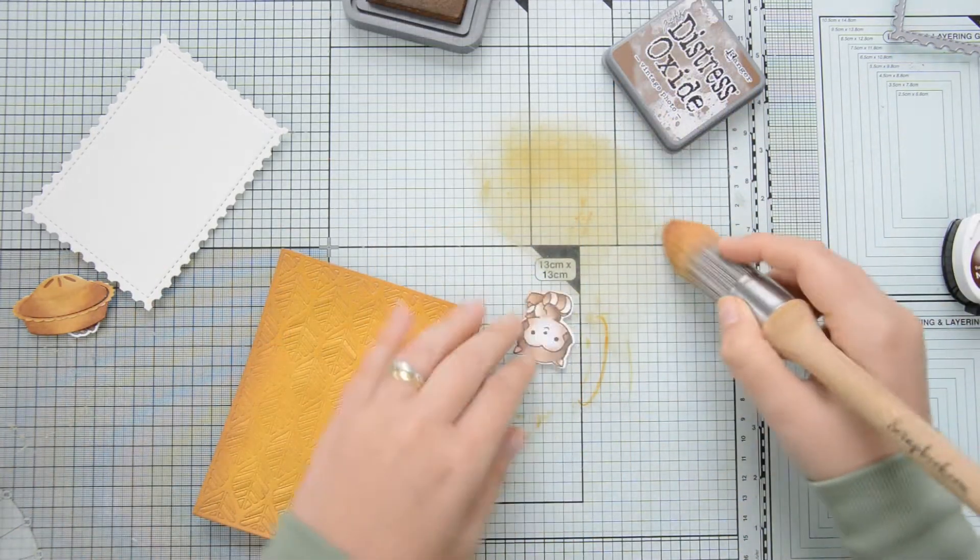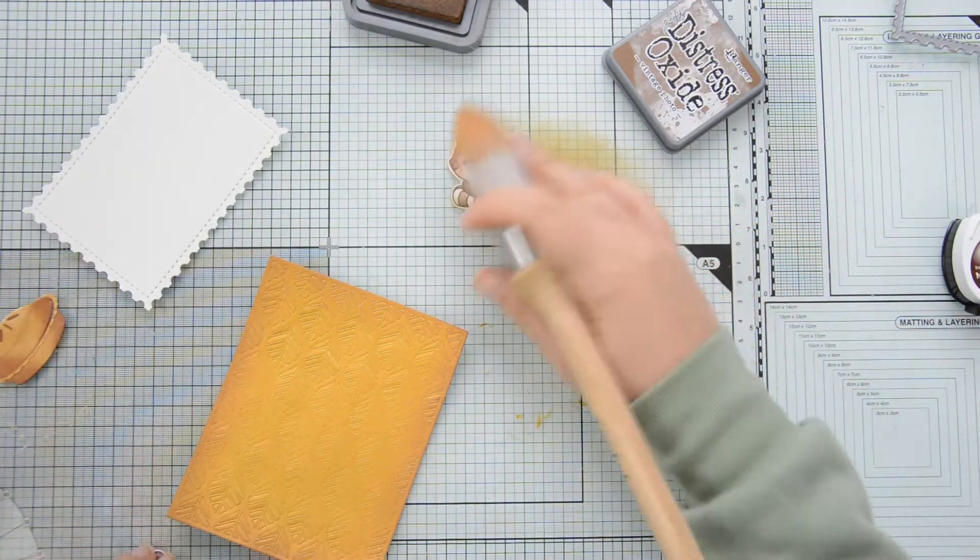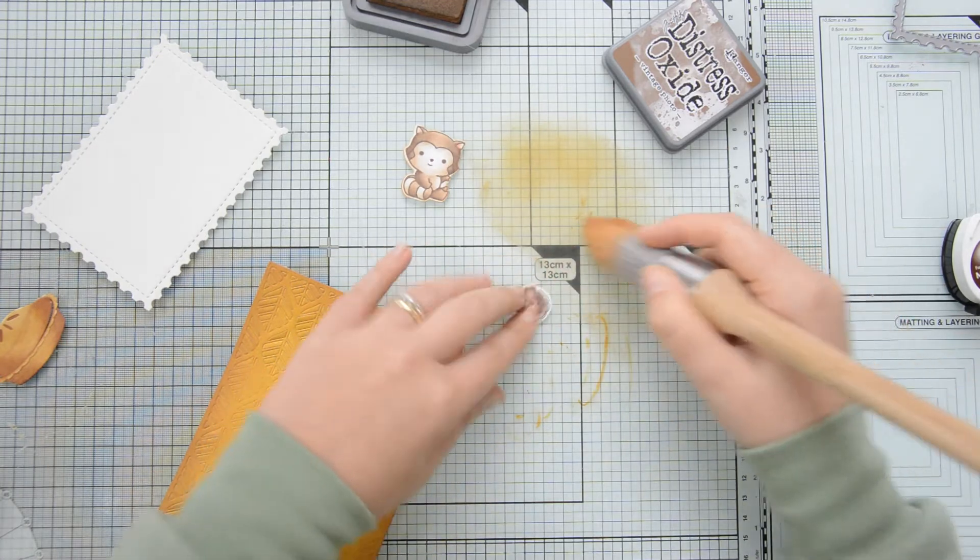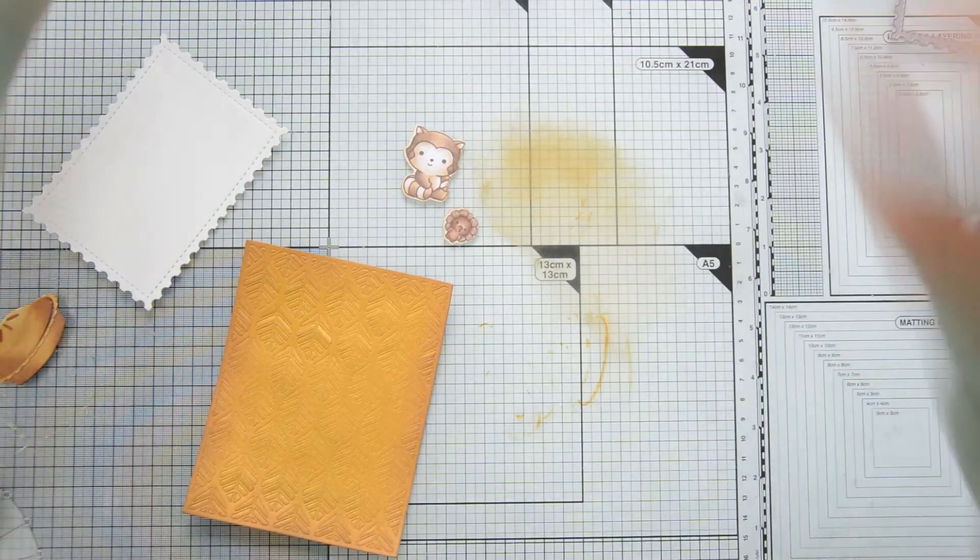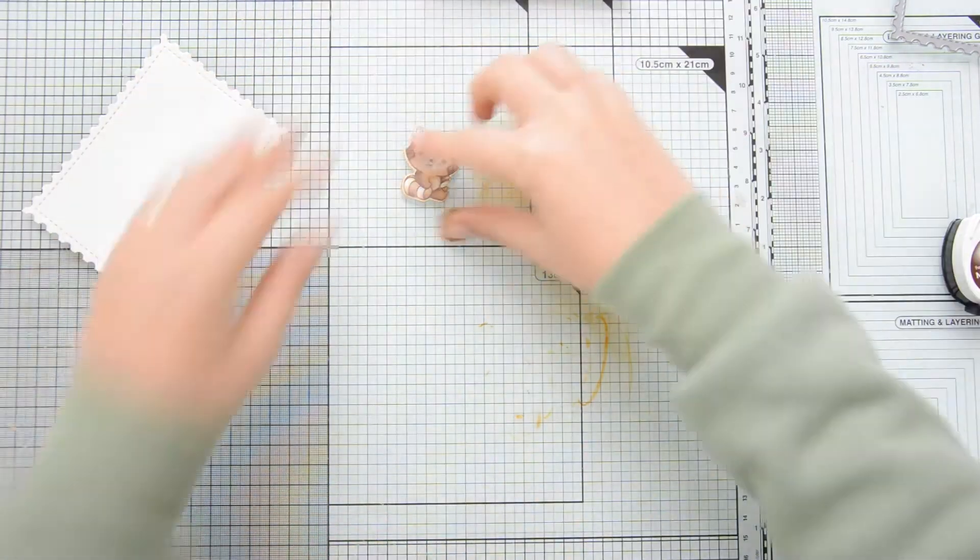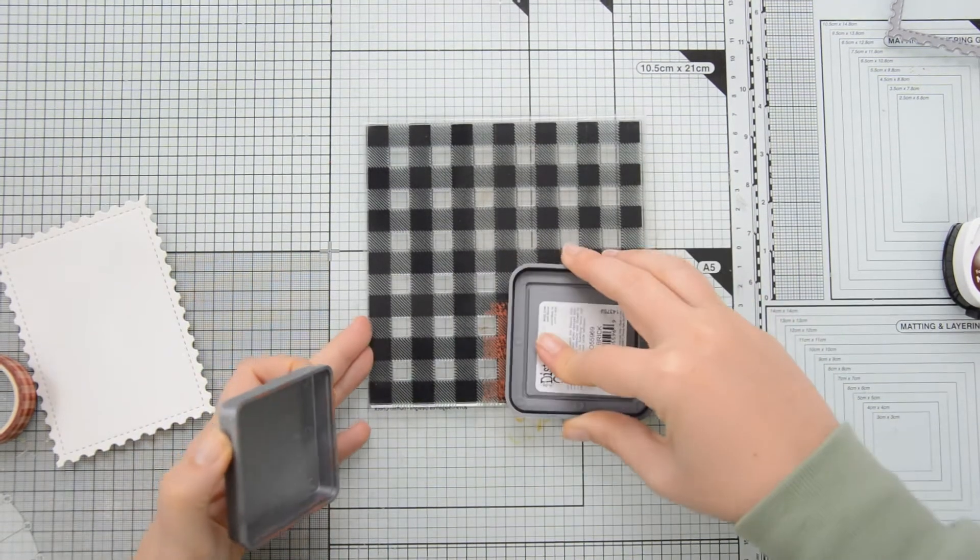Because I die cut the images I have this white outline which I felt was going to be a little bit stark and by brushing my distress oxides along the edges I softened it up so the images will still be separated from the background because of that outline but it will not be as strong as I said.